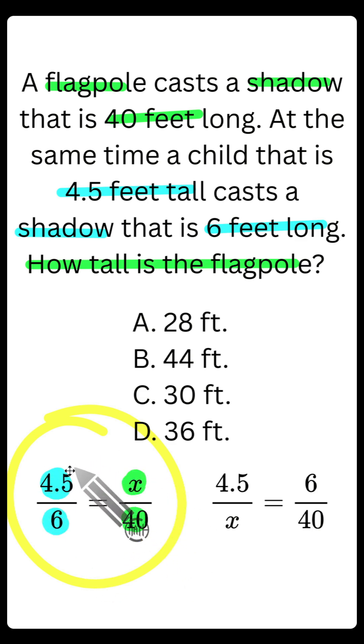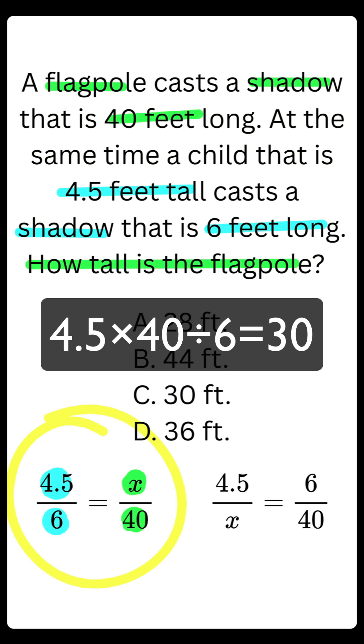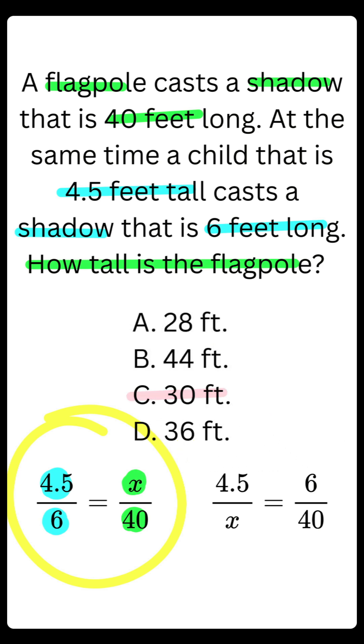But both of these things at the top, the 4.5 and the x, are the heights, and both of these things at the bottom are the shadows. Cross multiply and divide. 4.5 times 40 immediately divide by 6. Our final answer is going to be C, 30 feet. That's the height of the flagpole.